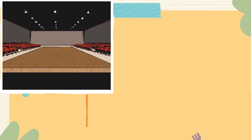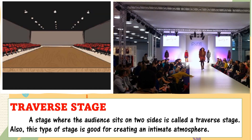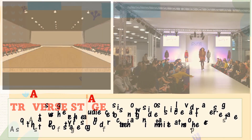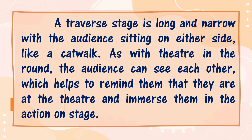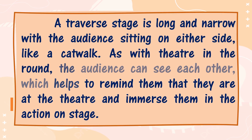The last type of stage is the traverse stage. A stage where the audience sits on two sides is called a traverse stage. This type of stage is good for creating an intimate atmosphere. A traverse stage is long and narrow, with the audience sitting on either side, like a catwalk. As with theater-in-the-round, the audience can see each other, which helps to remind them that they are at the theater and immerse them in the action on stage.